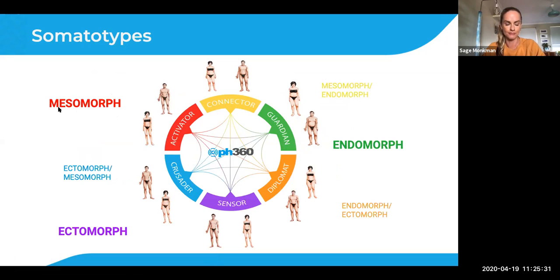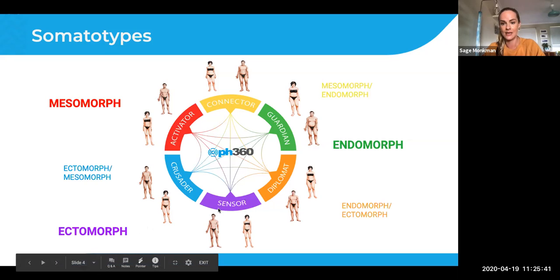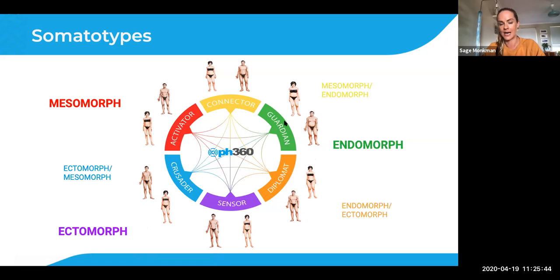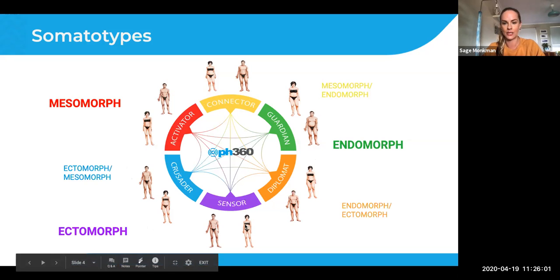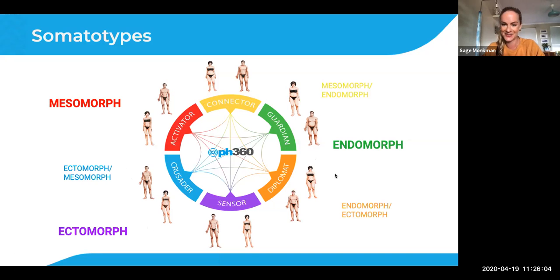There are three primary types: the mesomorph, which forms our Activator; the ectomorph, which forms our Sensor; and the endomorph, which forms our Guardian. Then there are hybrids: the mesomorph-endomorph hybrid forms our Connectors; the mesomorph-ectomorph hybrid forms our Crusaders; and the ectomorph-endomorph hybrid forms our Diplomats. That's basically how your health types are formed.